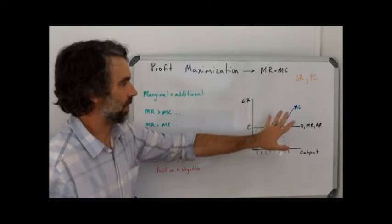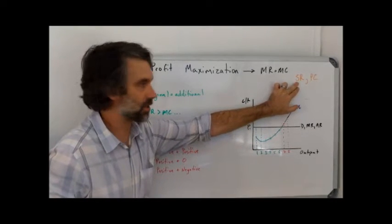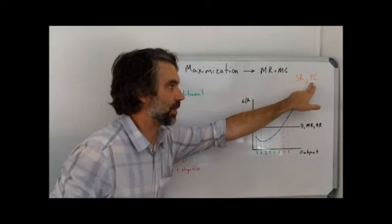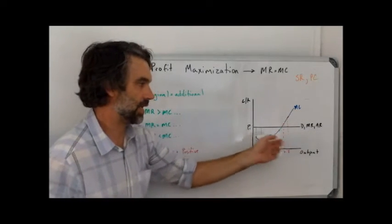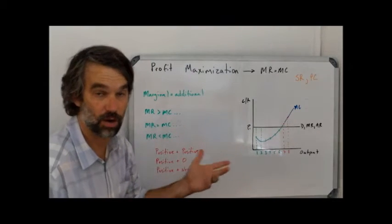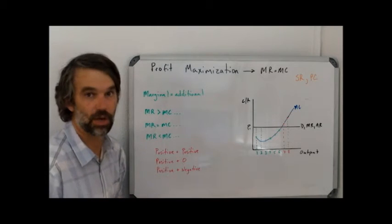Keep in mind that when we're talking about this, we're talking about the short run - we know that because there's some amount of fixed costs - and we're talking about perfect competition. We know it's perfect competition because we see the perfectly elastic demand curve faced by a firm in perfect competition because they're price takers.